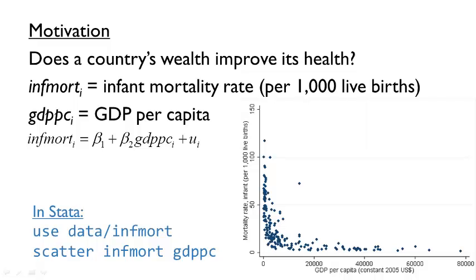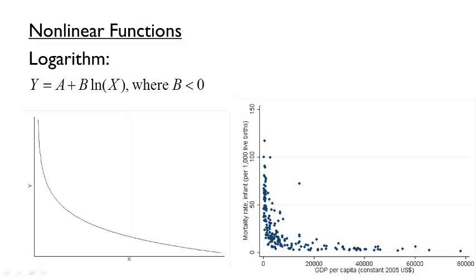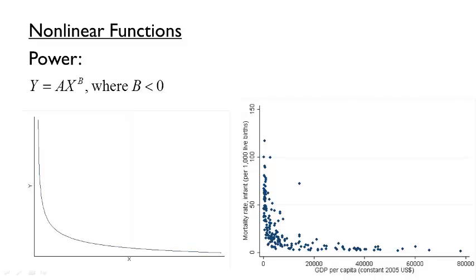How should we go about estimating a relationship that more accurately reflects the shape we see? One strategy is to think about a familiar mathematical function whose shape appears to match the data. Let's consider three such functions. First, an inverse relationship given by y = a + b/x, where a and b are constants. Second, the logarithm function — the negative of a logarithm results in a shape similar to our data. Finally, a function where the independent variable is raised to a negative power, such as b equals negative one-half, giving y equals a constant divided by the square root of x.